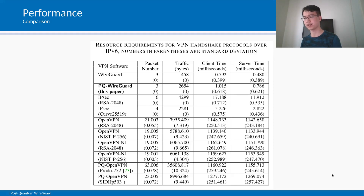We expect that further optimization of the implementation can bring PQ WireGuard even closer to the performance of WireGuard. When comparing with other VPN software, PQ WireGuard outperforms in terms of every metric, except it has slightly larger traffic than IPsec using X25519. PQ WireGuard is still four times faster than IPsec with X25519, and more than a thousand times faster than any OpenVPN variant. This shows that PQ WireGuard offers full protection against quantum attacks while being more performant than any other widely deployed VPN software except for the original WireGuard.